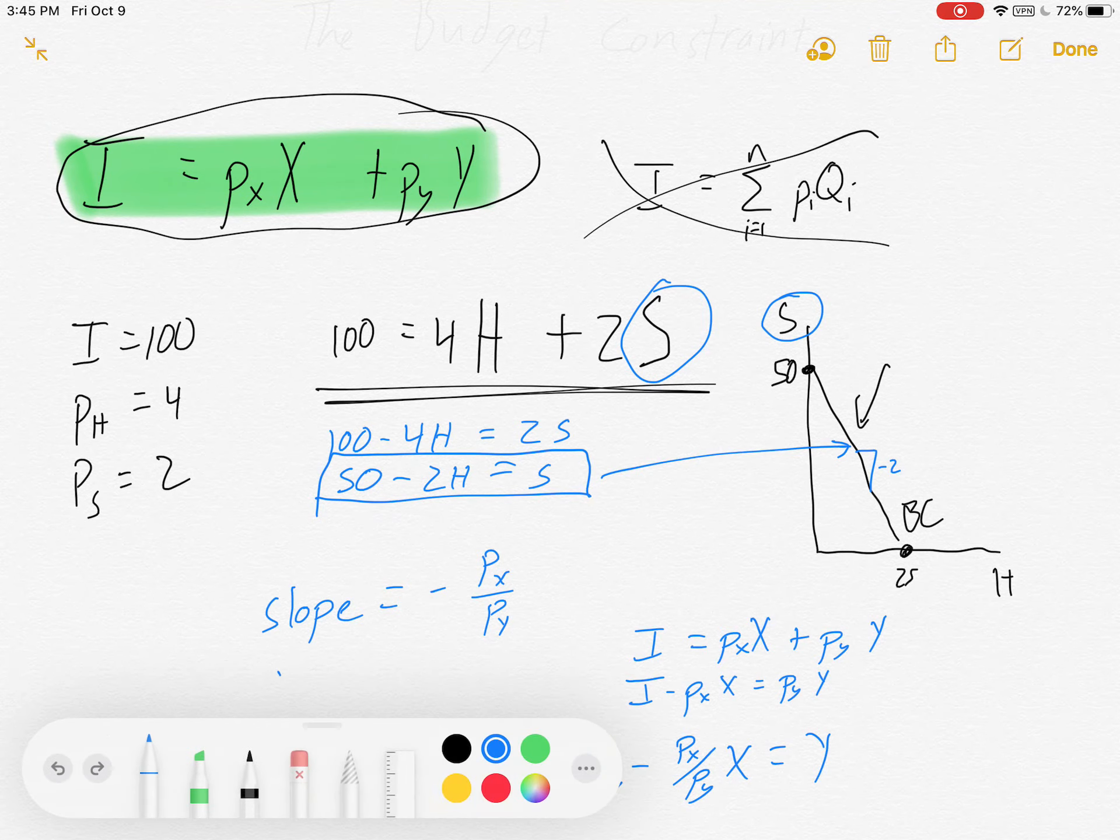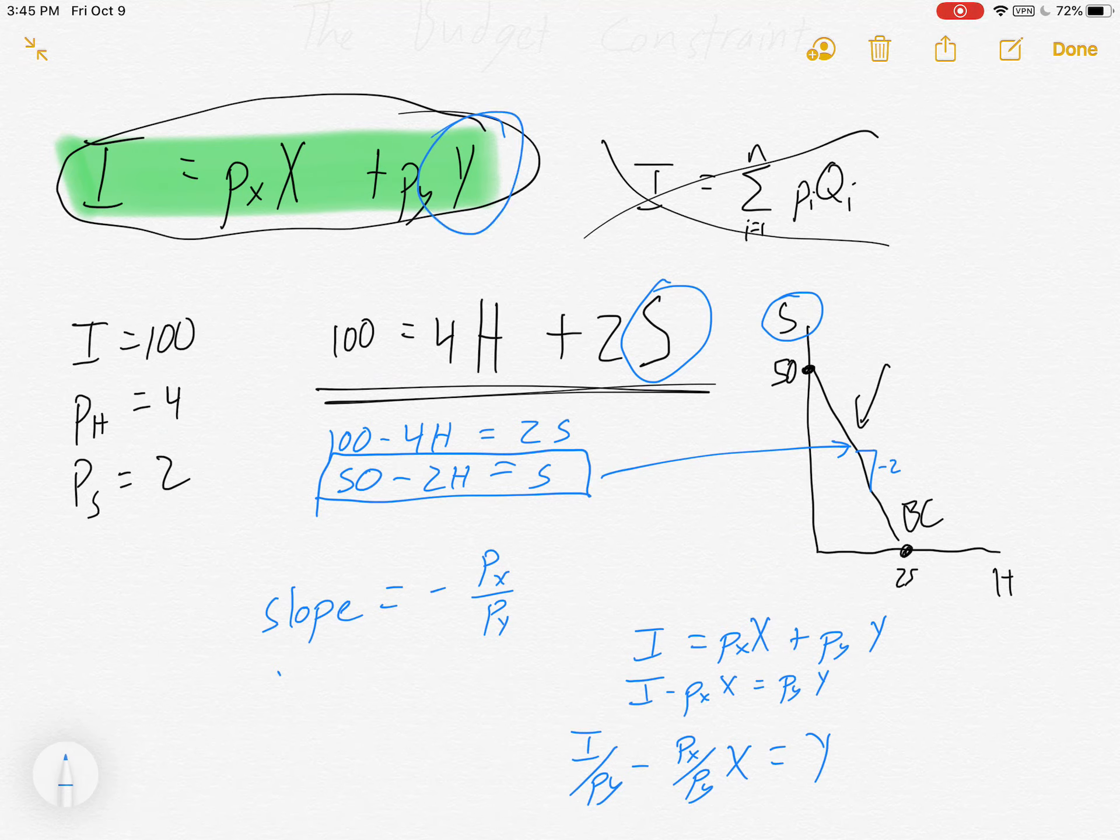Everything starts with this equation. Start there and know that sometimes you need to solve for Y in order to get this graph. But if you just remember those two things: start with this equation I equals the sum of the price times quantities, and then solve for your vertical variable, you'll be set.